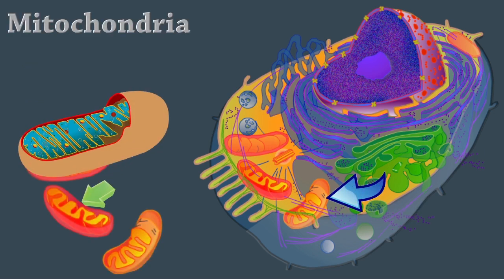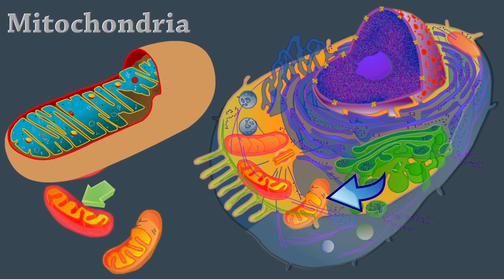Mitochondria are rod-like double membrane structures. This inner membrane is folded into projections called cristae. This is the site of ATP synthesis and is the powerhouse of the cell. They help with other tasks like signaling, differentiation, and cell death.